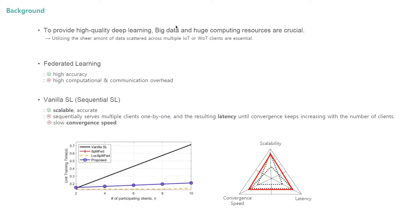Despite improvement in scalability and resource efficiency, vanilla SL suffers from latency problems caused by its sequential operation of the server serving the clients one by one. To overcome the sequential processing latency of vanilla SL, we aim to develop a parallel SL framework that enables the sheer amount of WoT clients to collectively train distributed DNN while achieving the following three goals: scalability, convergence speed, and latency.